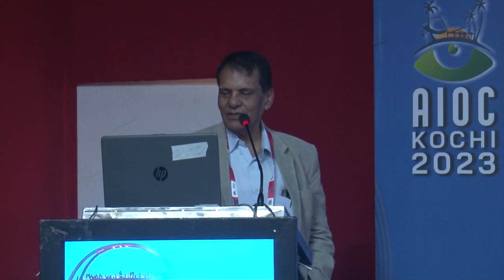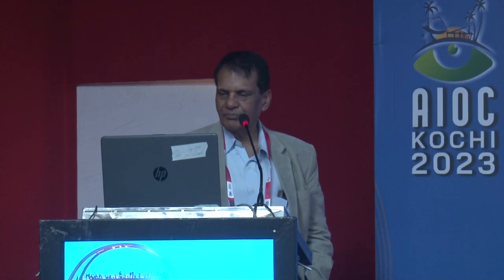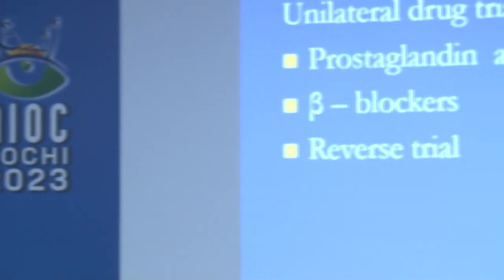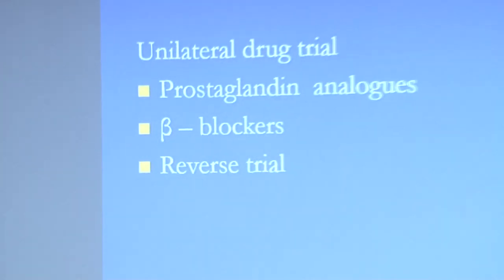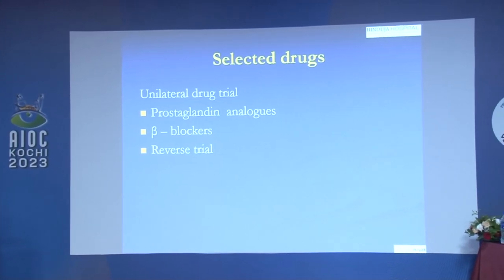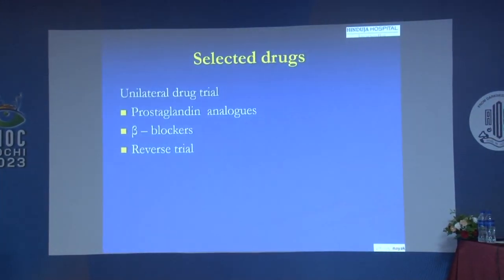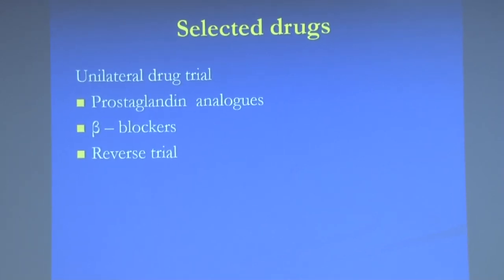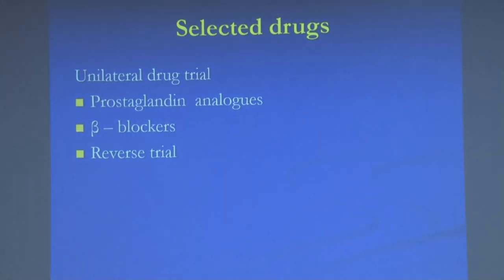When selecting a drug, unless there is a compelling reason otherwise, consider a therapeutic trial in one eye only — give the medicine in one eye and review after a couple of days to assess how much IOP reduction has been achieved. Based on the response, decide whether to continue, start in the other eye, or discontinue.